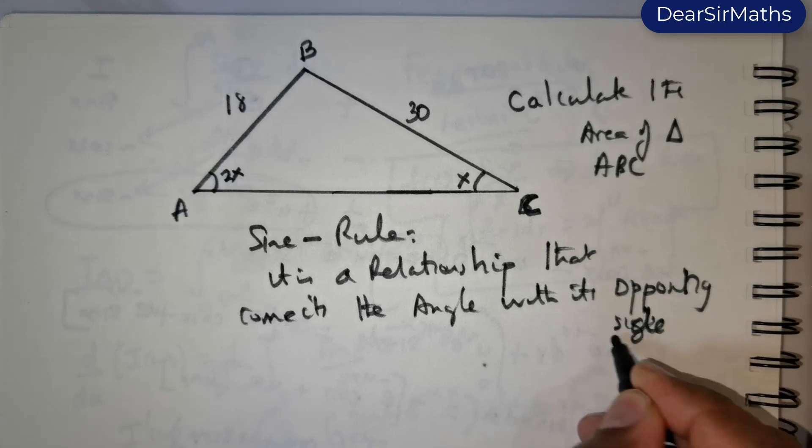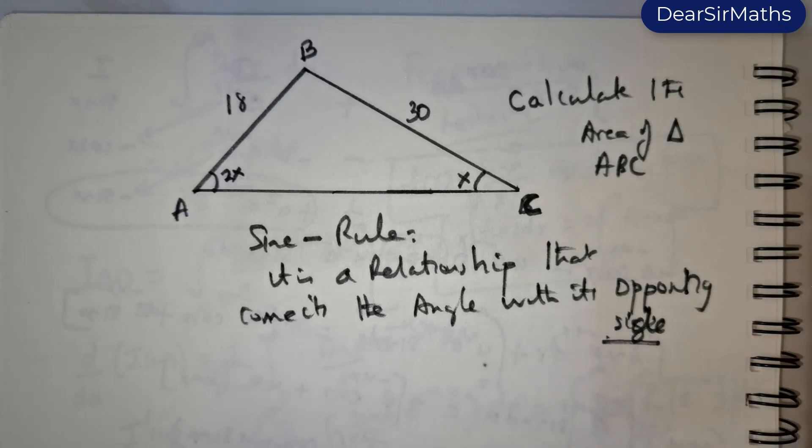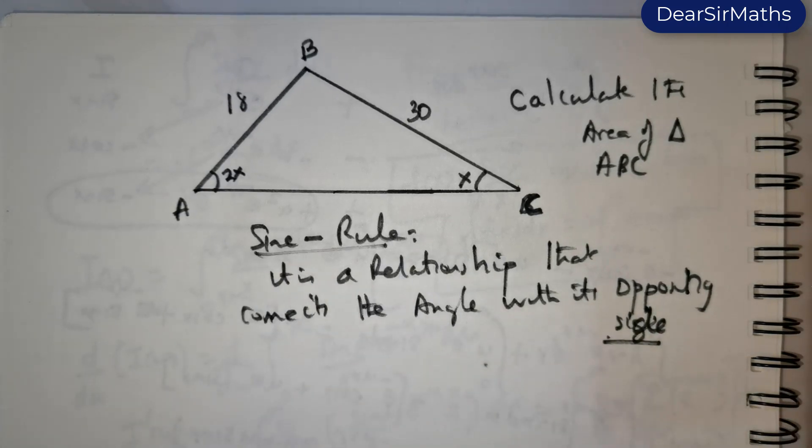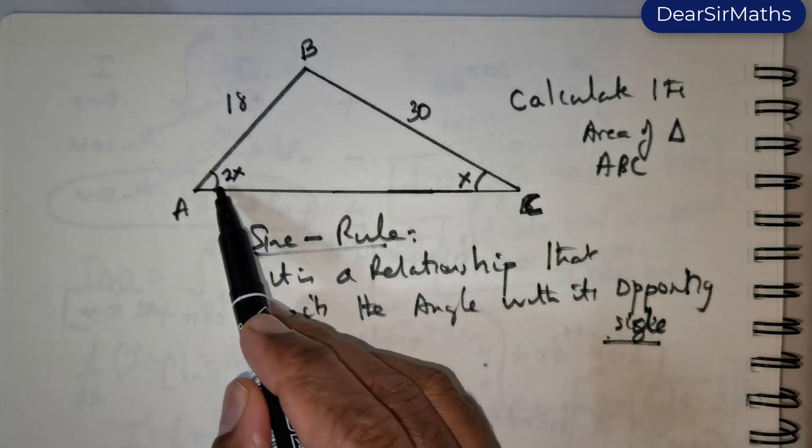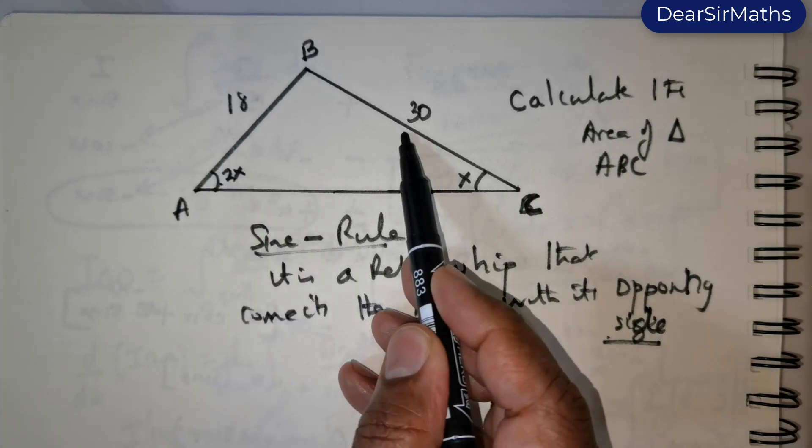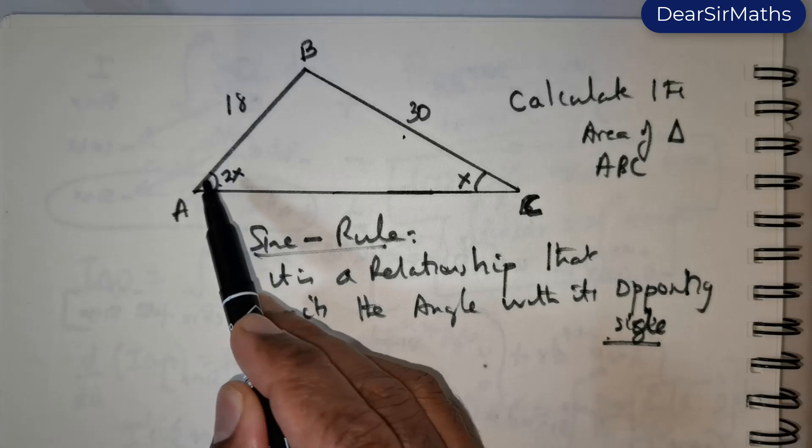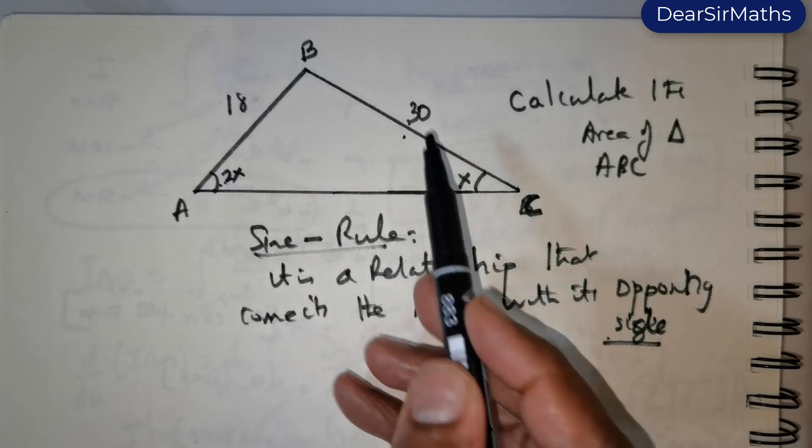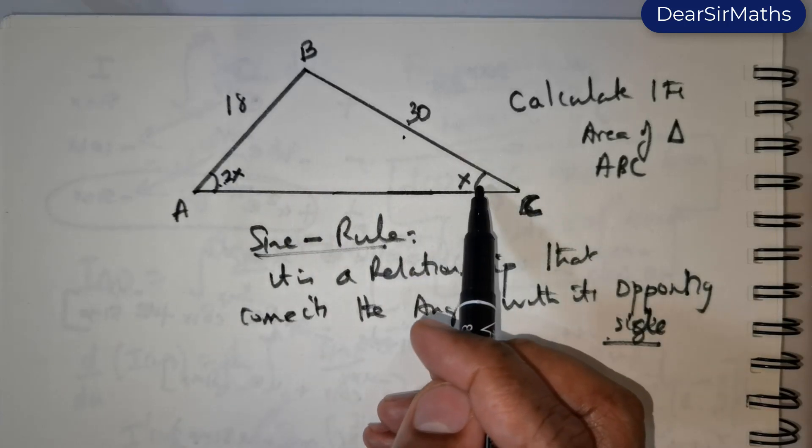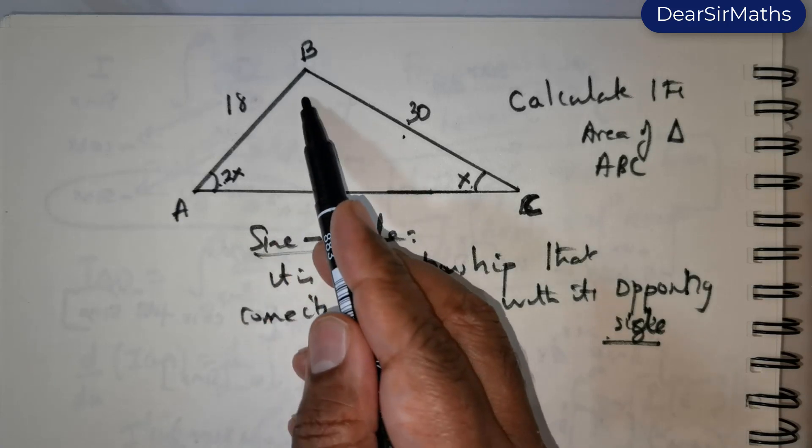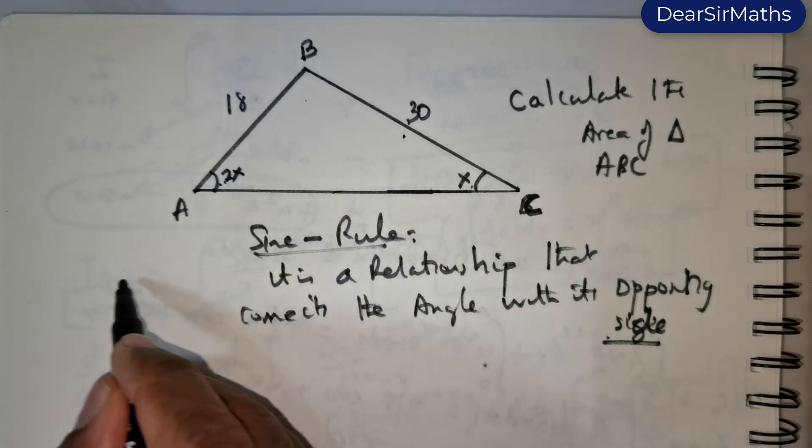That is the simplest way to actually define the sine rule. So it is actually a relationship between the angle and the opposing side. So there is connectivity between this angle and its opposing side, a connectivity between this angle and its opposite side, and this angle and its opposite side.